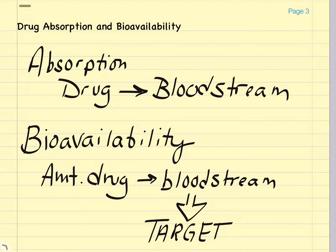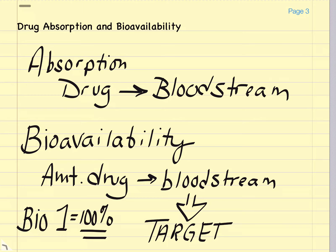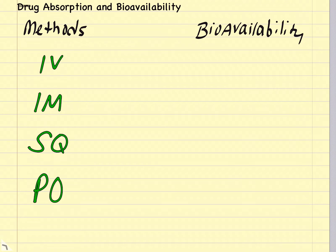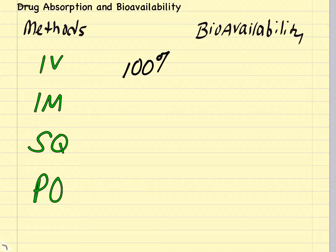This would be seen in an IV drug. There are no drugs that have bioavailabilities greater than one, only one or less than one. Before a drug can reach its site of action, it must pass across a series of cellular membranes that make up the absorptive surfaces of the sites of administration. The degree to which a drug is absorbed and reaches the general circulation is called the bioavailability. For an IV drug given directly into the bloodstream, 100% of that drug goes into the bloodstream and the bioavailability is going to be one.